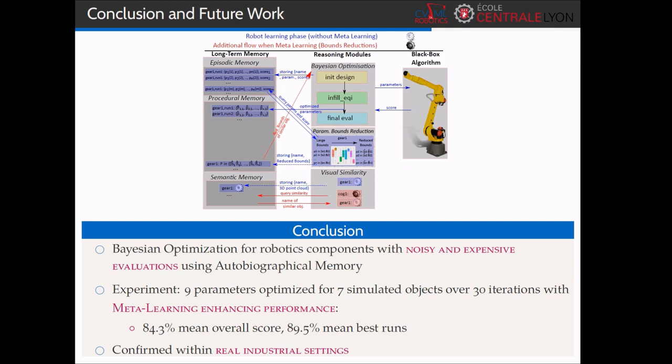We have validated the approach with simulated experiments on object grasping from homogeneous heaps, with good results from 30 learning iterations, to optimize 9 parameters of a grasping software. We showed a significant increase of performance when using the meta-learning strategy, as opposed to without. The architecture has also been tested and implemented within a real industrial setting, showing again an increase of performance when reducing the search space for similar tasks.